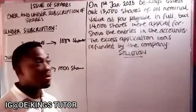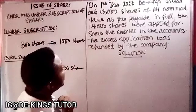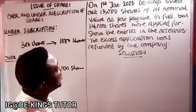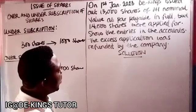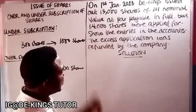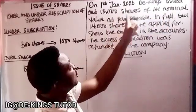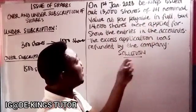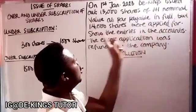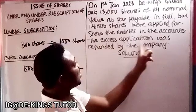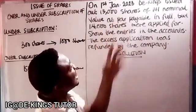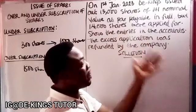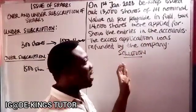Now let's look at an example question. On 1st January 2023, the Kings issued 13,000 shares of one naira nominal value at par, payable in full, but 14,000 shares were applied for. The excess application was refunded by the company. This is a case of over subscription — 13,000 were issued but 14,000 were applied for. We'll show the entries in the accounts.